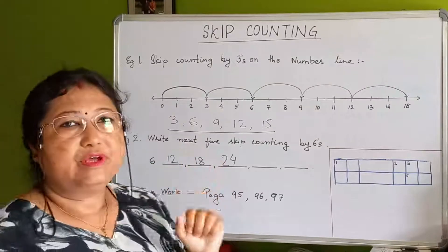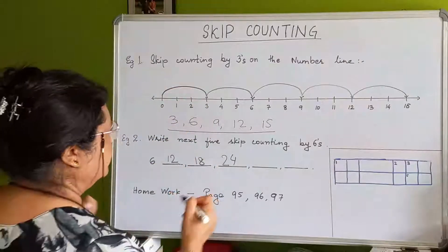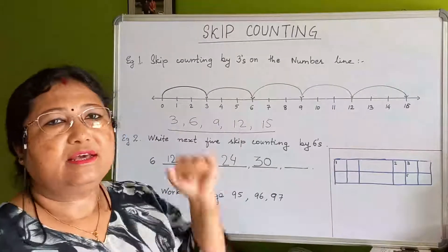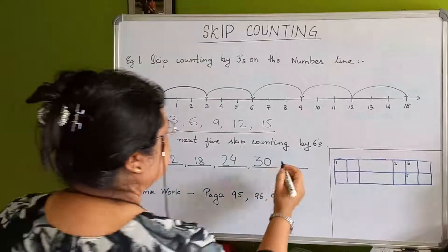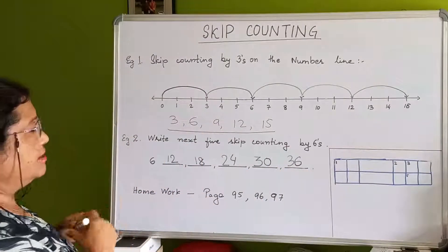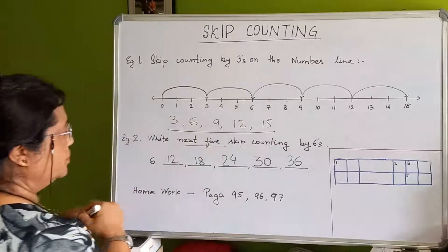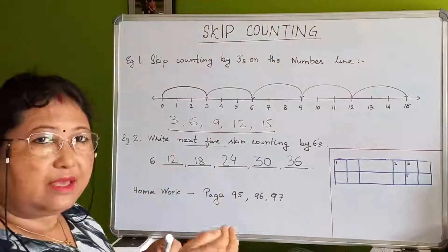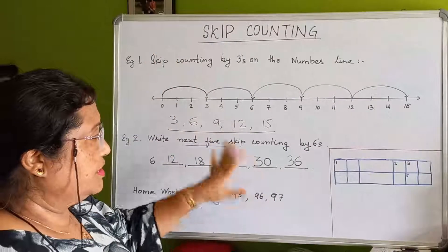Next number is twenty-four. Again add six: twenty-five, twenty-six, twenty-seven, twenty-eight, twenty-nine, thirty. Then again add six: thirty-one, thirty-two, thirty-three, thirty-four, thirty-five, thirty-six. So the numbers are 6, 12, 18, 24, 30, 36. We jumped five times, counting six each time.